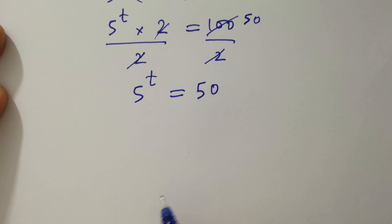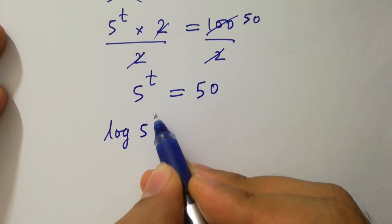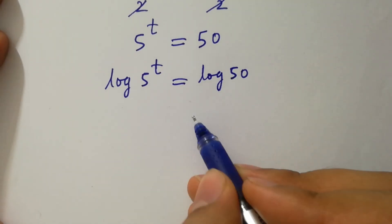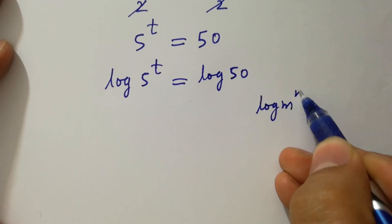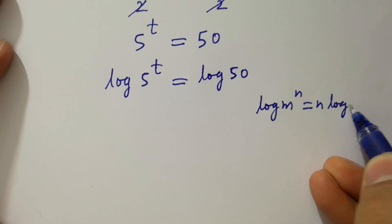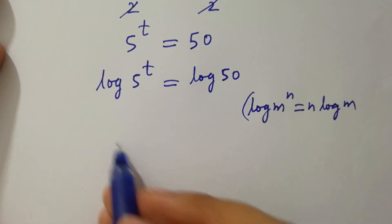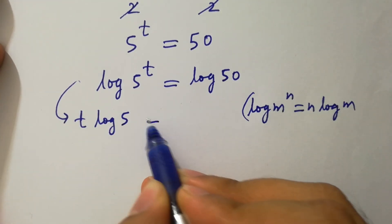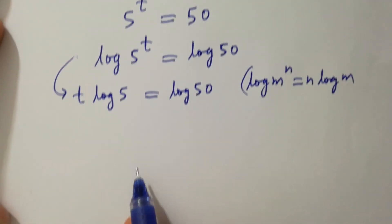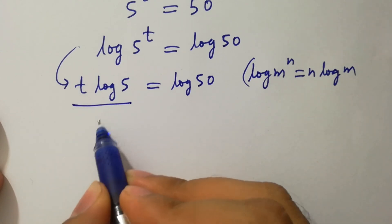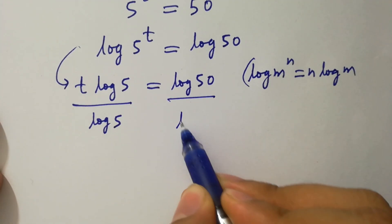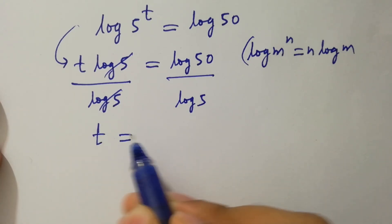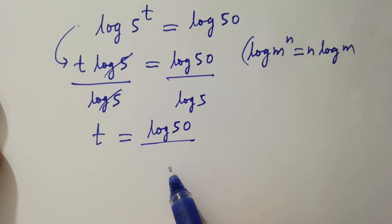To solve this, take log on both sides. Log 5 to the power t equal to log 50. Since log m to the power n equals n log m, it will be t log 5 equal to log 50. To cancel this log 5, divide by log 5 on both sides where log 5 and log 5 cancel, so t equal to log 50 over log 5.